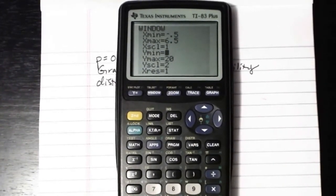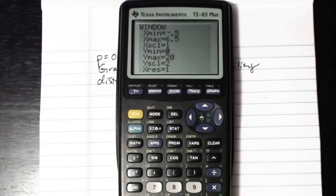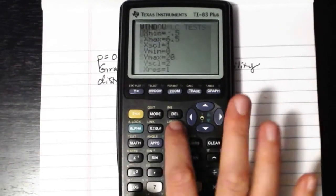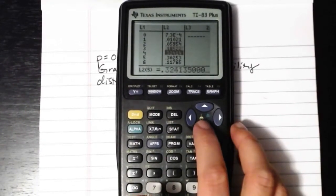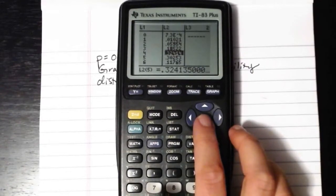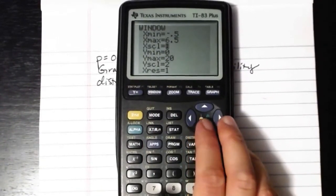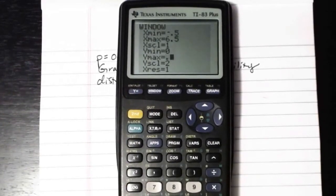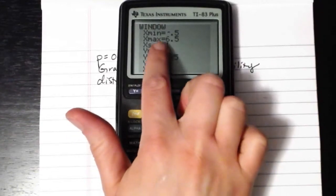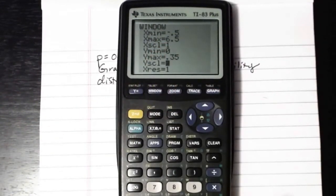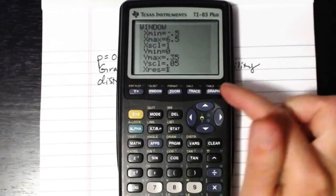Ymin should be set to 0, and ymax should be set just a little bit higher than whatever your highest probability was from list two. And honestly I don't remember what our highest probability was, so I'm going to go back and look at it. So our highest probability here, 32% roughly was the highest. So when I'm adjusting my window, I'll want to set that ymax to maybe 0.35, a little bit higher than whatever the highest probability is. And then yscale, you can use a lot of things here, but since I'm going to be going from 0 to about 35%, maybe I'll do that in increments of 5%, so 0.05. And then x res and all that other stuff you don't need to touch, this will be perfectly fine, and then press graph.